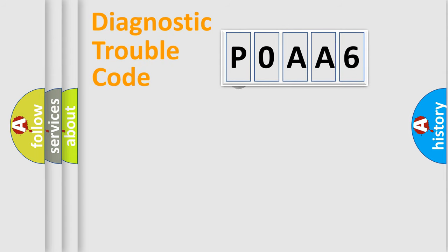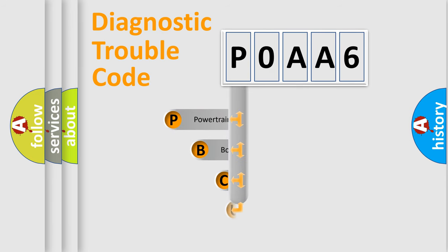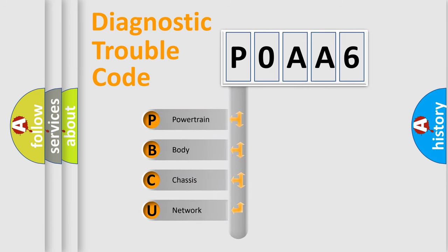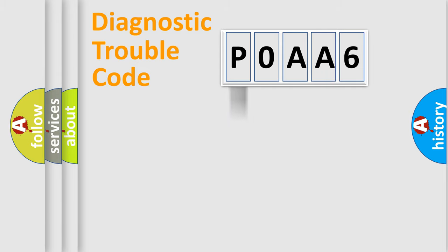First, let's look at the history of diagnostic fault code composition according to the OBD2 protocol, which is unified for all automakers since 2000. We divide the electric system of an automobile into four basic units: Powertrain, Body, Chassis, and Network. This distribution is defined in the first character of the code.